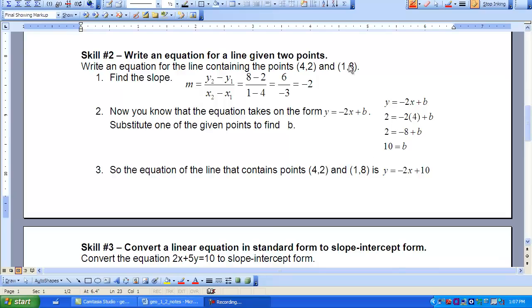So we have our two points with our coordinates. 8 minus 2 would be our difference in Y's, and 1 minus 4 would be our difference in X's. So 8 minus 2 is 6. 1 minus 4 is negative 3. And if you simplify 6 over a negative 3, you see that that's negative 2.